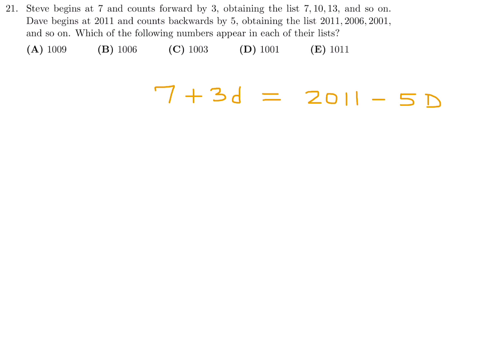I'll do it for the correct answer choice, which is this one. 1,006, could it equal 7 plus 3D? And the answer is yes. It gives you an integer value for small d, 333. The same number, 1,006, could it equal 2,011 minus 5D? And the answer is yes. It gives you a big D value of 201. So it works out for both, and therefore that is the correct answer. Number 21, the answer is B.